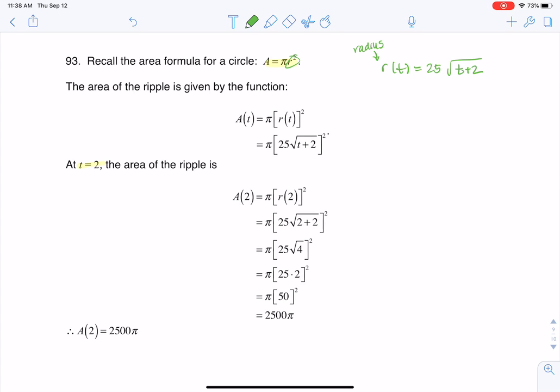Well, they told us the ripple, or we wanted to find the ripple at t equaling 2, so let's go ahead and see how large was this ripple from this raindrop two minutes after it hit. So r of 2 would be equal to 25 times the square root of 2 plus 2.